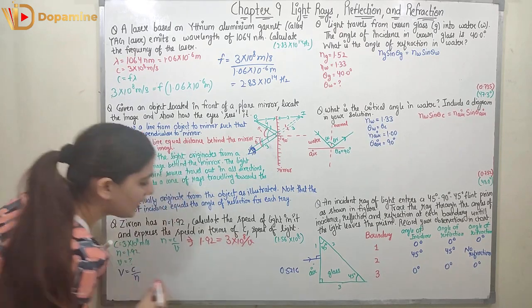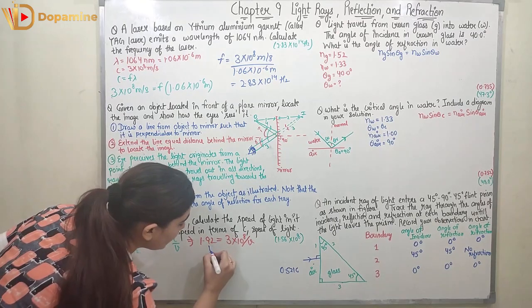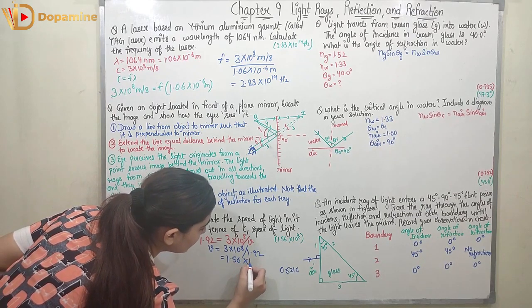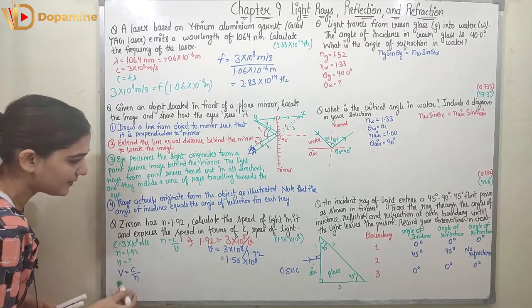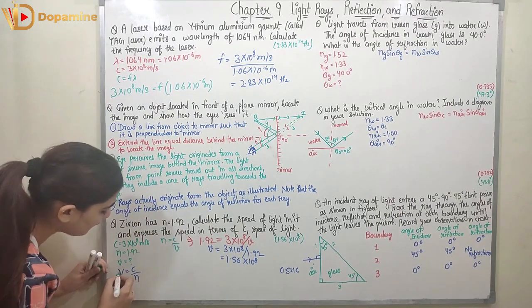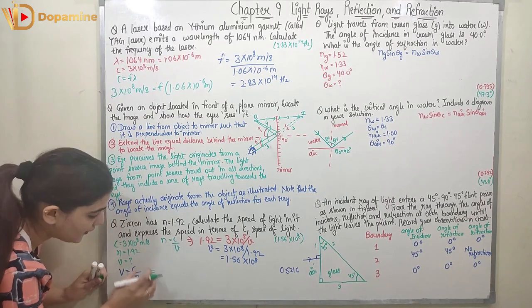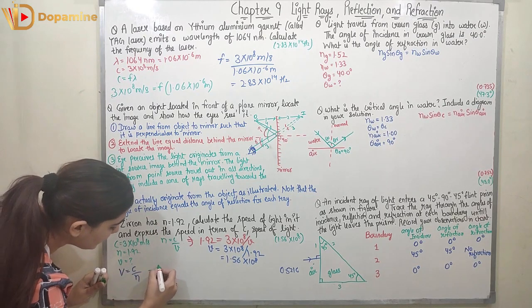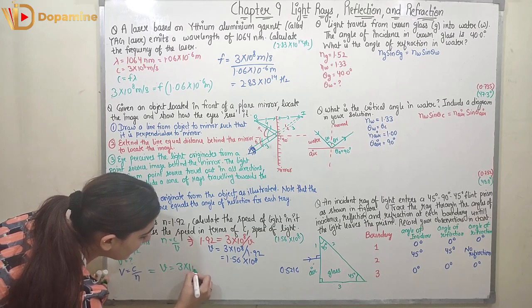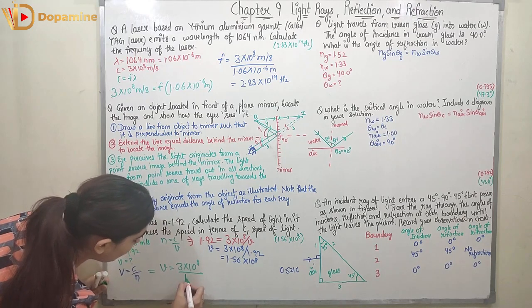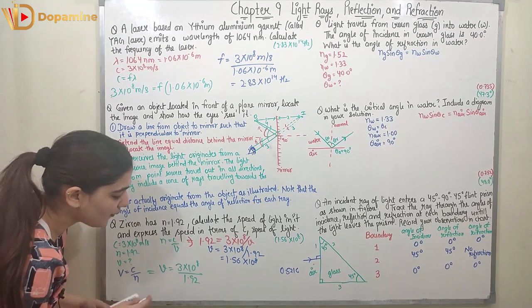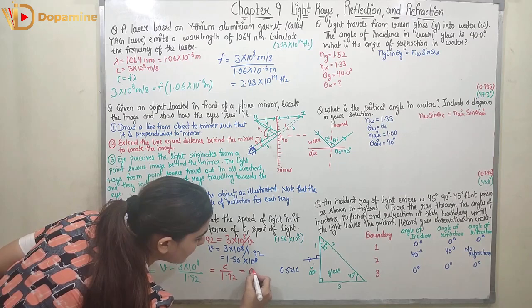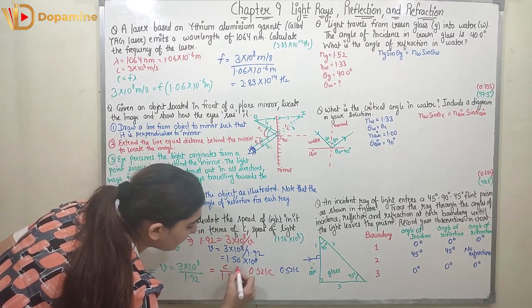Substituting: 1.92 = 3 × 10⁸ / v, so v = 3 × 10⁸ / 1.92 = 1.56 × 10⁸ m/s. For the second part, expressing in terms of c: v = c / n = c / 1.92 = 0.521c. So v = 0.521c in terms of the speed of light in vacuum.